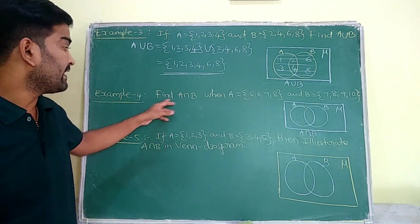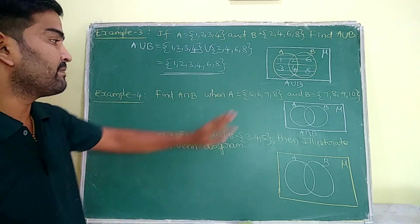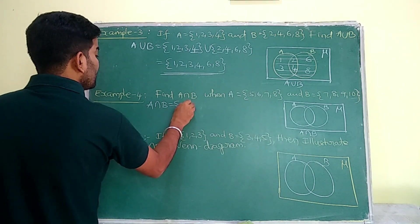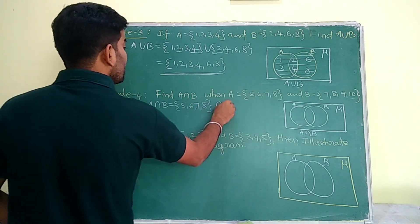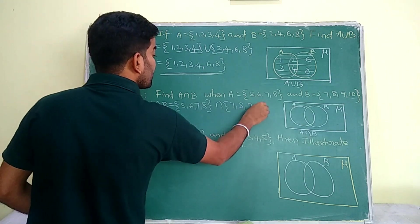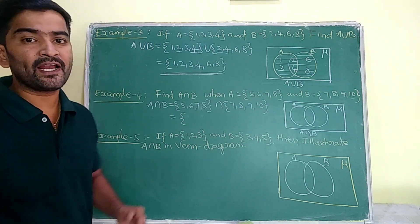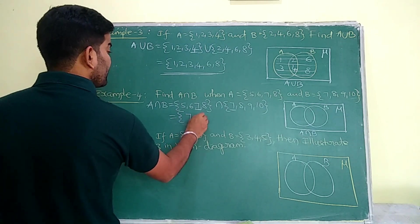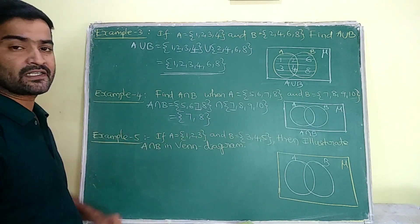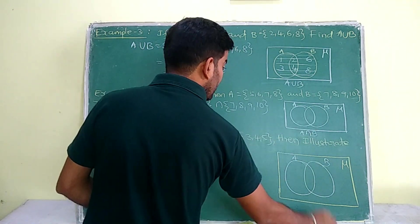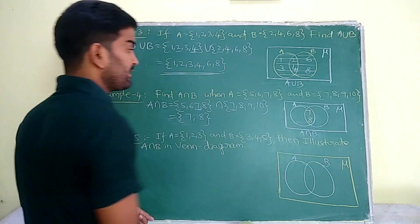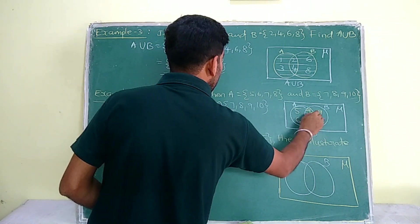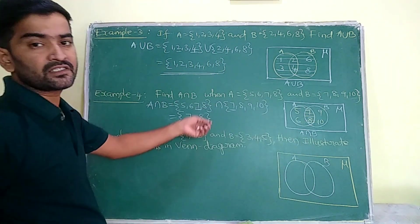Example 4: Find A intersection B when A = {5, 6, 7, 8} and B = {7, 8, 9, 10}. A intersection B means only the common elements of both sets are taken into a new set. In the two sets, 7 and 8 are the common elements. So 7, 8 come into the intersection set A∩B. In the Venn diagram, fill 7, 8 in the common place; elements left in A are 5, 6 and in B are 9, 10. A intersection B means only the common place is shaded.